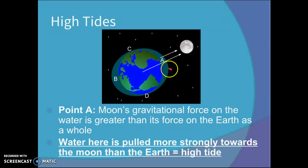Point A is the obvious one. It's closest to the Moon. The Moon's gravitational force is going to be strongest here. So water here is pulled more strongly towards the Moon than the Earth. That's why we get a high tide here. You get a swell of water being pulled towards the Moon.